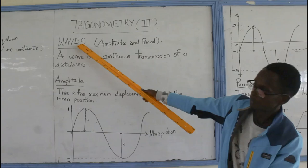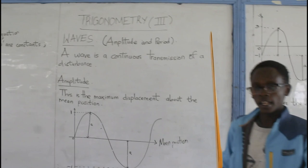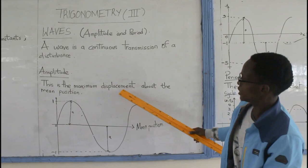Then, we dive into the amplitude. What is an amplitude of a wave? An amplitude of a wave is the maximum displacement about the mean position. If I can just show you here.